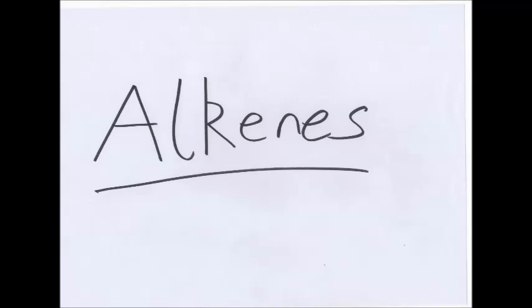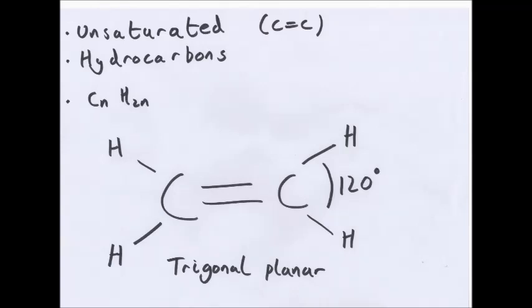Hello and welcome to my next video on alkenes. These are unsaturated, they have at least one carbon-carbon double bond, they are hydrocarbons, so they contain hydrogen and carbon only, and they have the general formula CnH2n, so if you have C5 it becomes H10. They all have the shape trigonal planar around the carbon with a bond angle of 120 degrees, they are also flat.